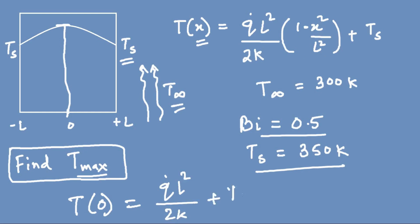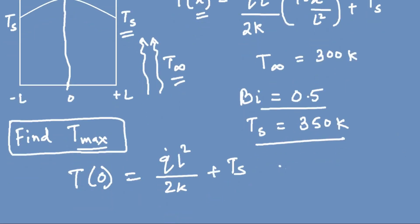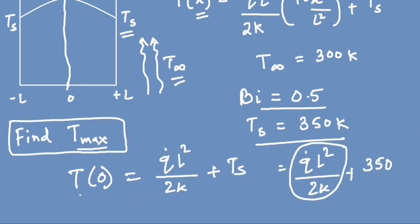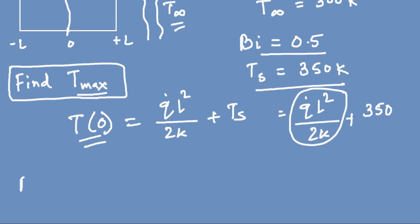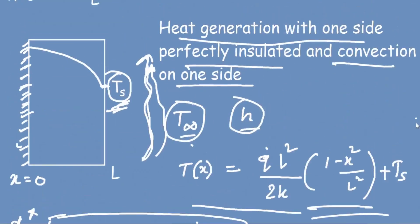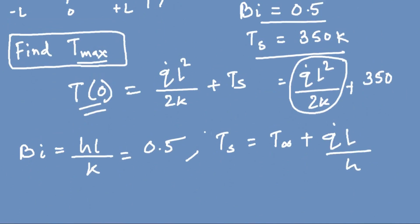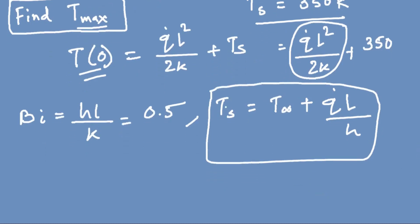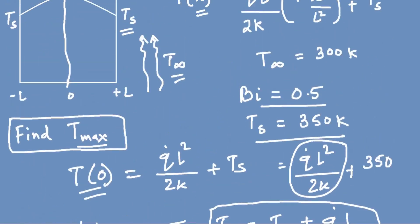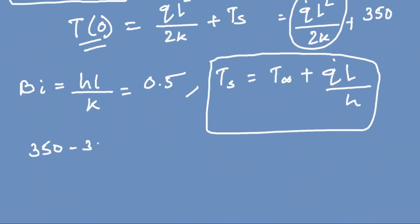At x = 0, T_max equals q_dot·L²/2k plus Ts, which is q_dot·L²/2k plus 350. Using the surface temperature relation Ts = T_infinity + q_dot·L/H, with Ts = 350 and T_infinity = 300, we get 350 minus 300 equals q_dot·L/H, so q_dot·L/H equals 50.